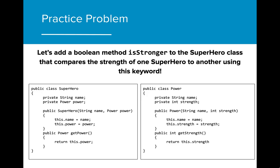Let's try a practice problem using our superhero and power classes. We are going to create a method that compares the strength of one superhero to another. As a reminder, here are the superhero and power classes with a couple of getter methods. Notice that we use the keyword this in these class files to indicate the instance variables that are being initialized and returned. Before moving on, see if you can figure out the implementation of isStronger.